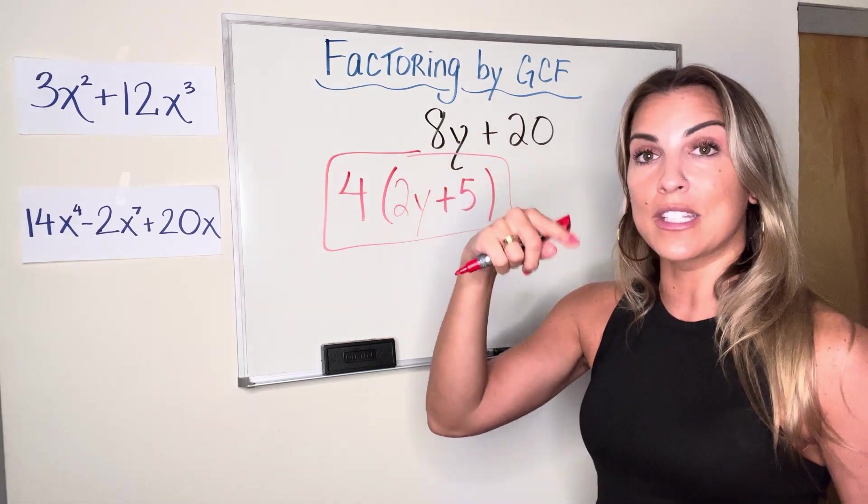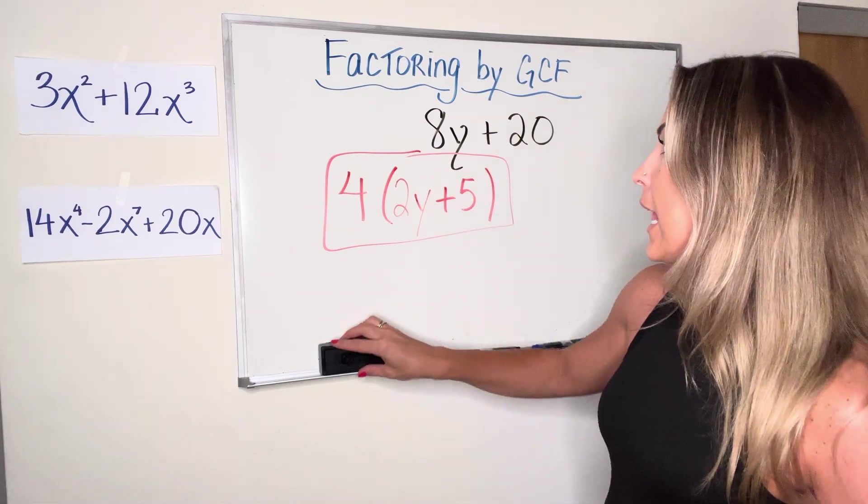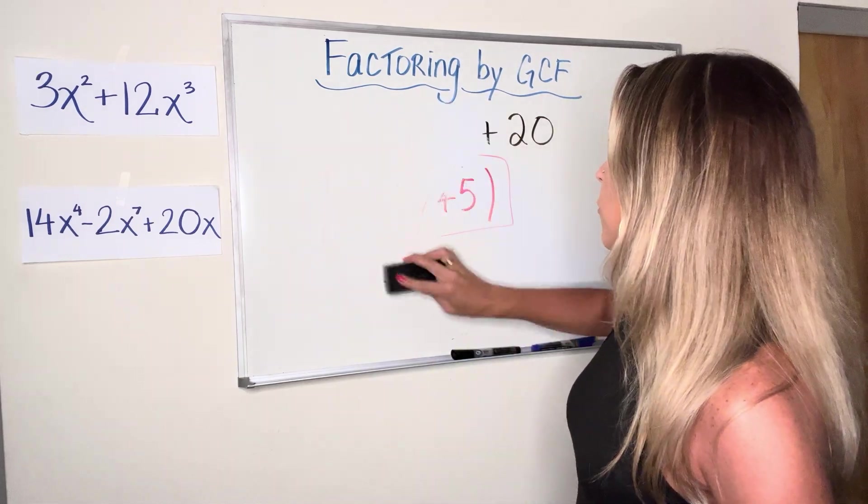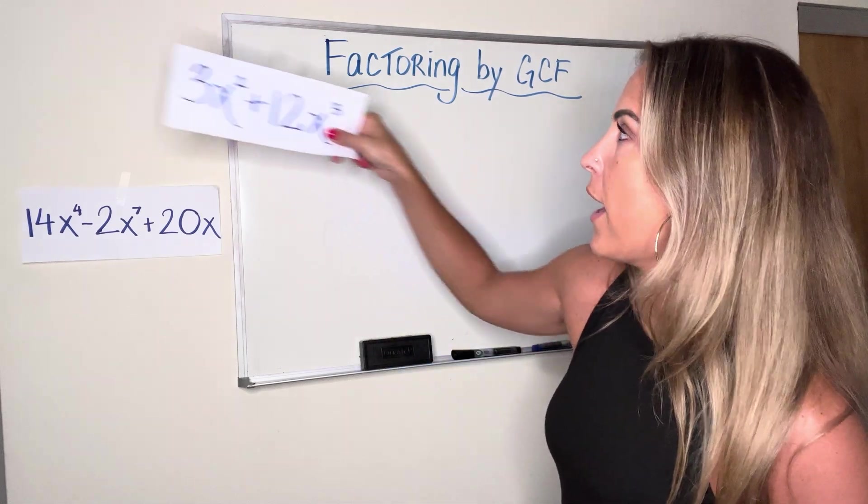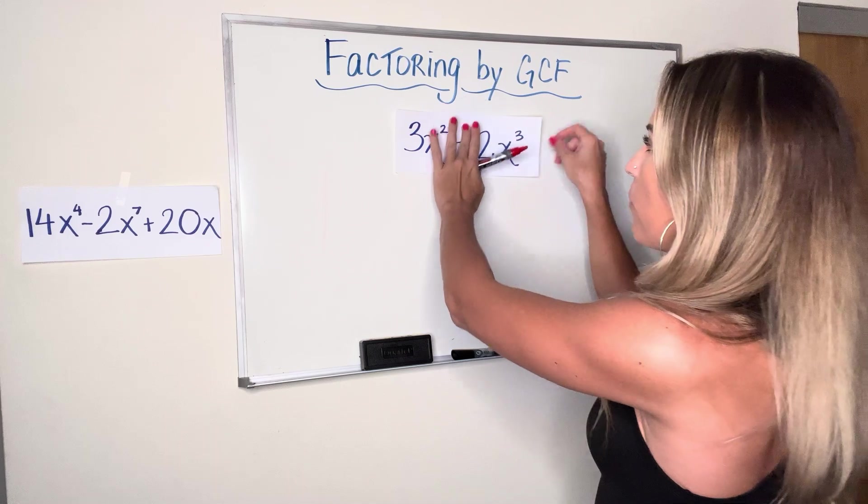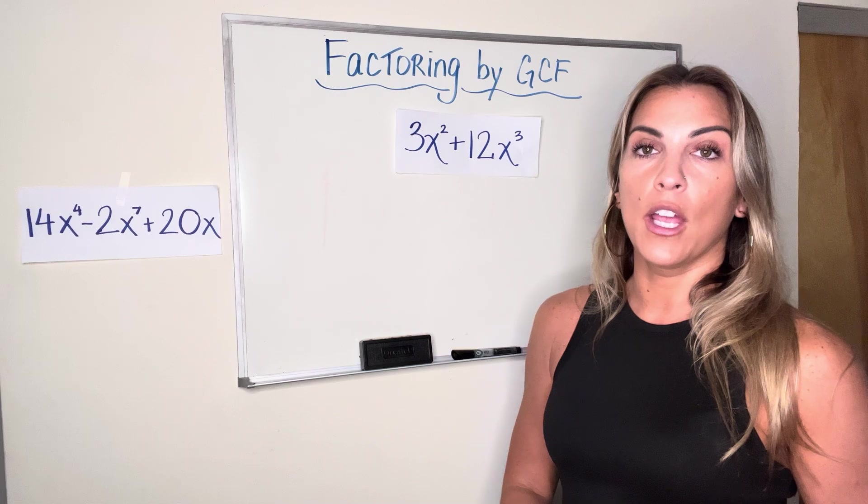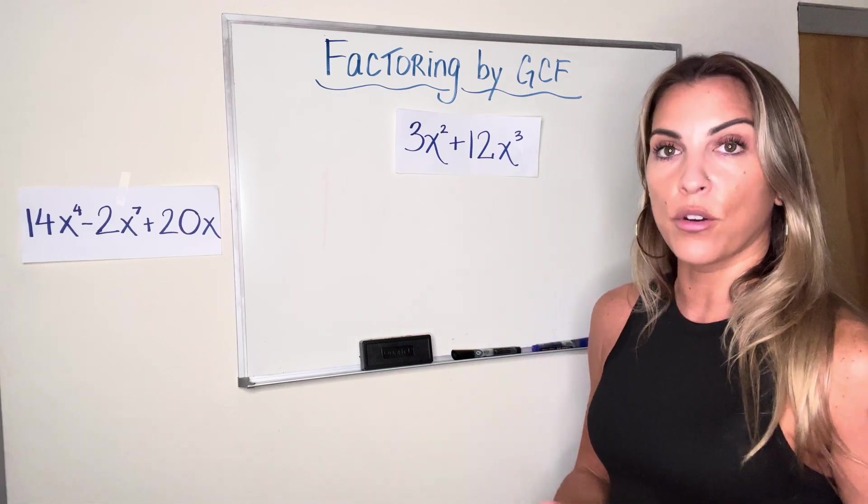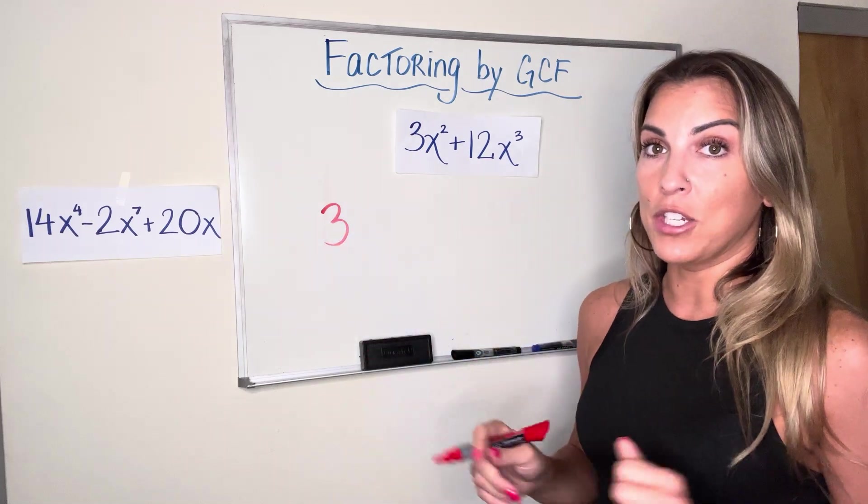Again, a quick check is to just distribute and make sure you get the expression you started with. All right, let's get the examples a little more complicated. So we're going to go to 3x² plus 12x³. So we can start with the numerical portion again. So looking at the 3 and the 12, what is the greatest number that can go into both 3 and 12? It's a factor of 3 and 12. The answer there is 3.